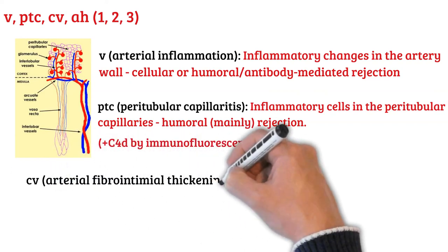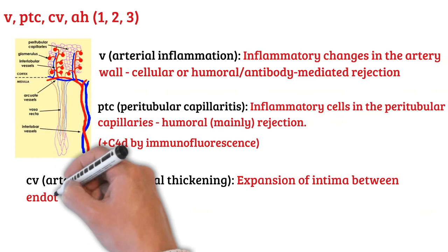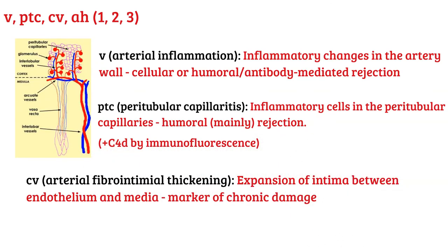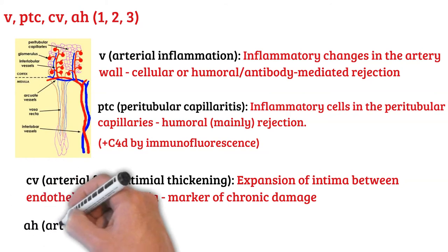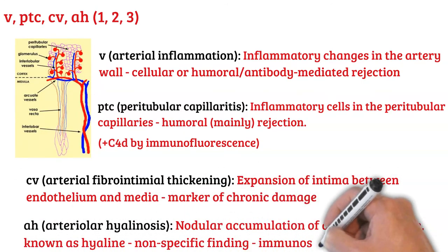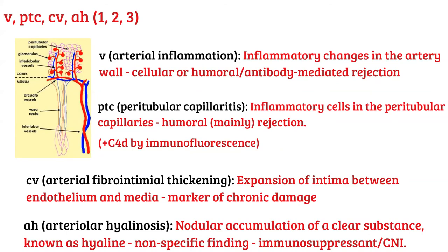The third vascular code is CV, which means arterial fibrointimal thickening. This represents the expansion of the intima between the endothelium and the media, serving as a marker for chronic damage. The fourth code is AH, arterial hyalinosis, which represents nodular accumulation of a clear substance known as hyaline. This is a nonspecific finding, but can be seen with immunosuppressive medications, particularly calcineurin inhibitors or CNIs.